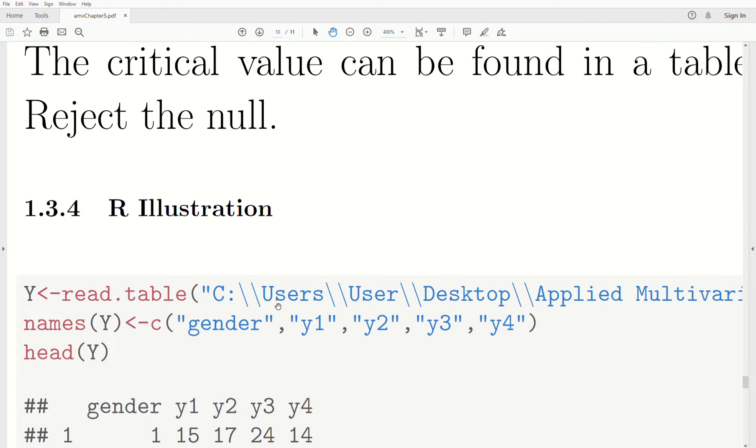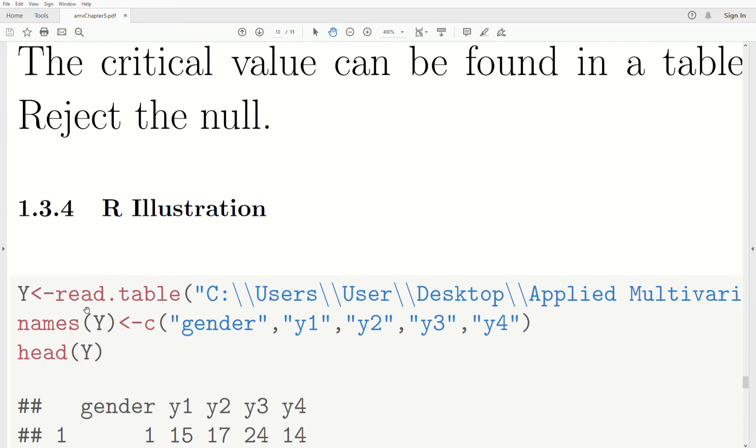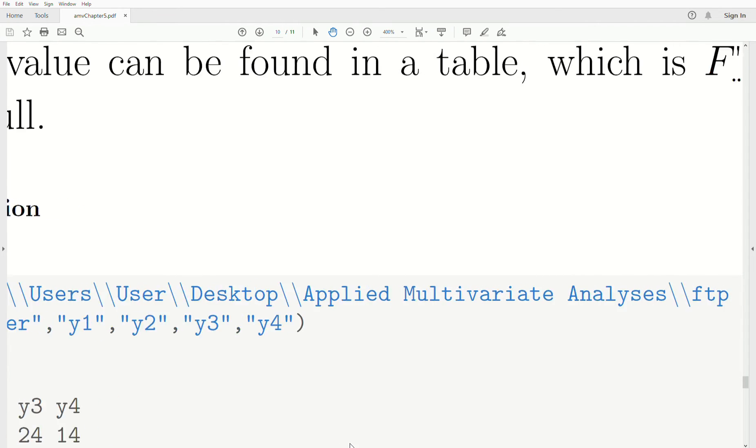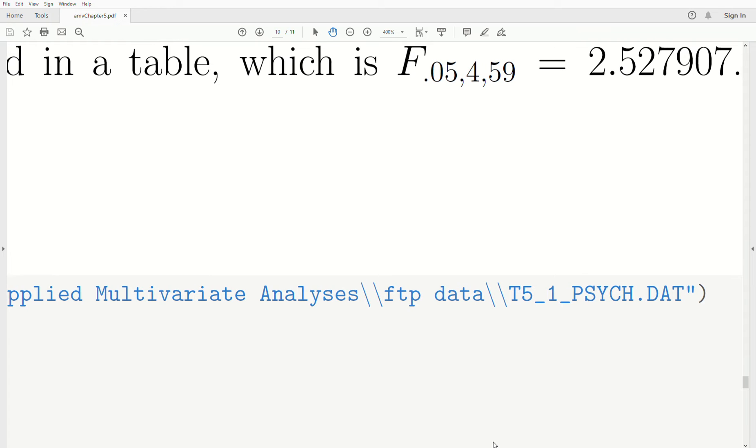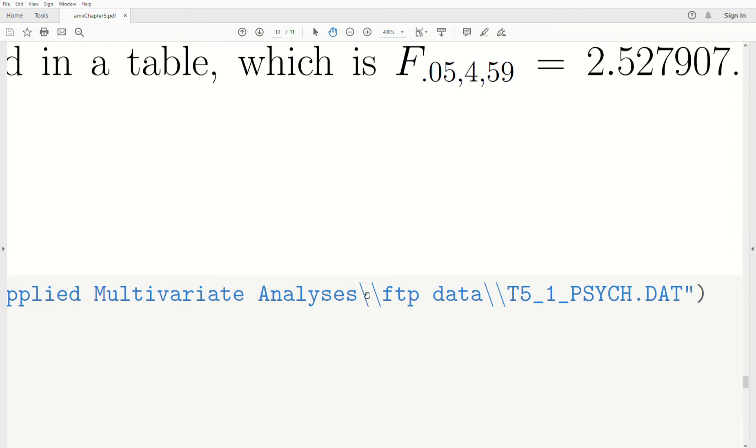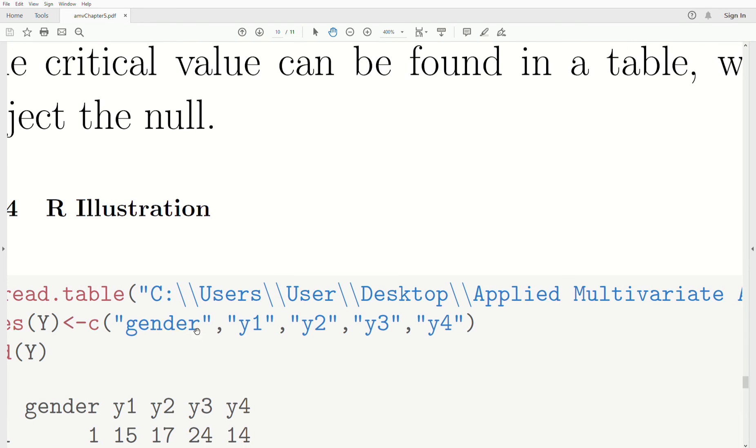I read in the data using read.table. I have the directory and then the name of the file. In R, the slashes - I always forget if it's forward or backward - you have to have two of them because that's a command function in R. It's expecting something afterwards, so you provide it again. Then it says, oh yeah, you want that in the directory name.